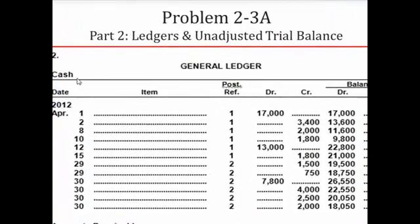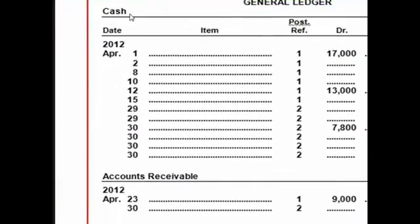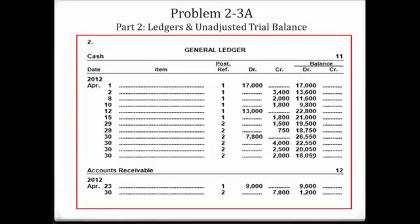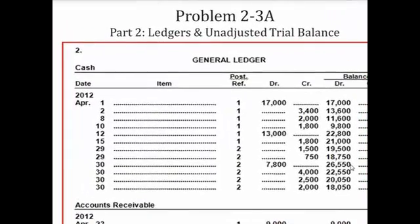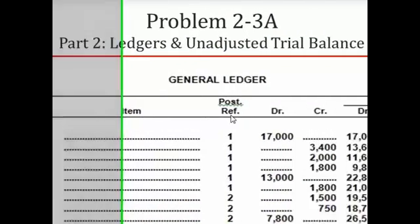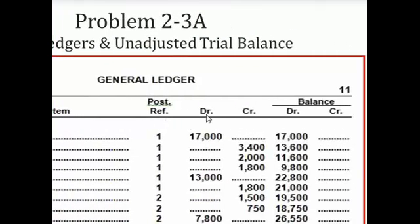Let's take a look at the cash ledger. Cash and accounts receivable are assets, so they have a normal debit balance. The way a ledger is set up for each and every account is that you have a date column, the item column, a post reference column, a debit and credit column, and then a balance debit and credit column.